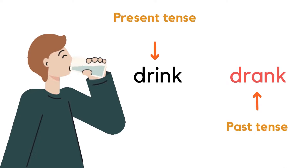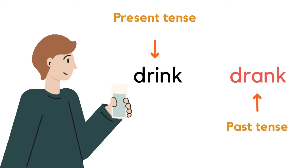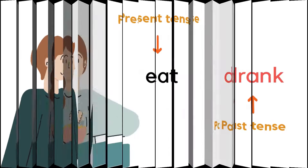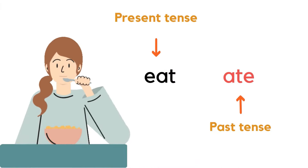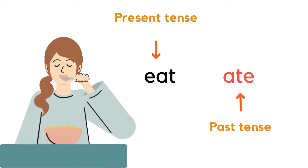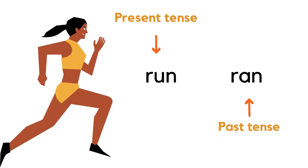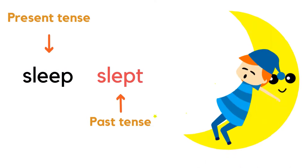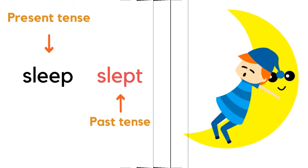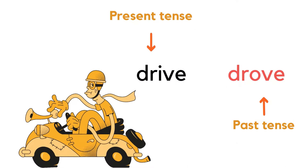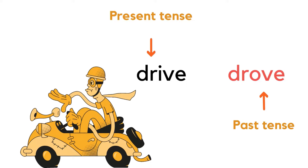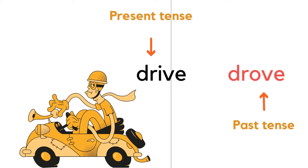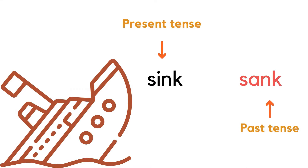The past tense of drink is drank. Eat — ate. Run — ran. Sleep — slept. Drive — drove. Sink — sank.